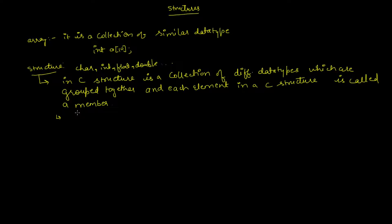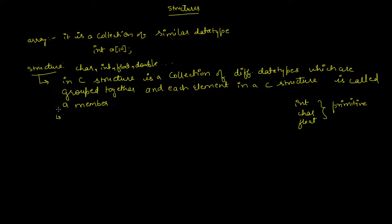Structures are user-defined data types, meaning the user can define what kind of memory they require for their variable. That memory will be made only by the combination of primitive data types such as integer, character, and float.